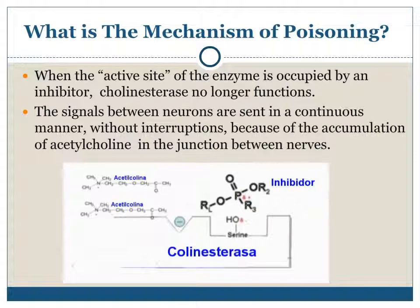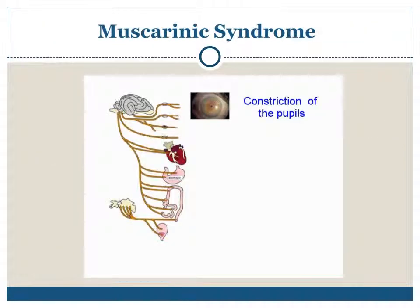What is the mechanism of poisoning? When the active site of the enzyme is occupied by an inhibitor, cholinesterase no longer functions. The signals between neurons are sent in a continuous manner without interruptions, because of the accumulation of acetylcholine in the junction between nerves.